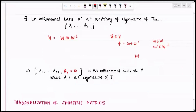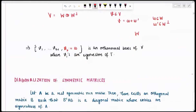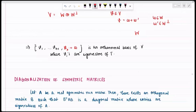We are going to see how this theorem shows that if I have a symmetric matrix it is diagonalizable — specifically the existence of an orthogonal matrix given by this theorem. The diagonalization result states: if A is a real symmetric n×n matrix, then there exists an orthogonal matrix B such that B⁻¹AB is a diagonal matrix whose entries are the eigenvalues of A.